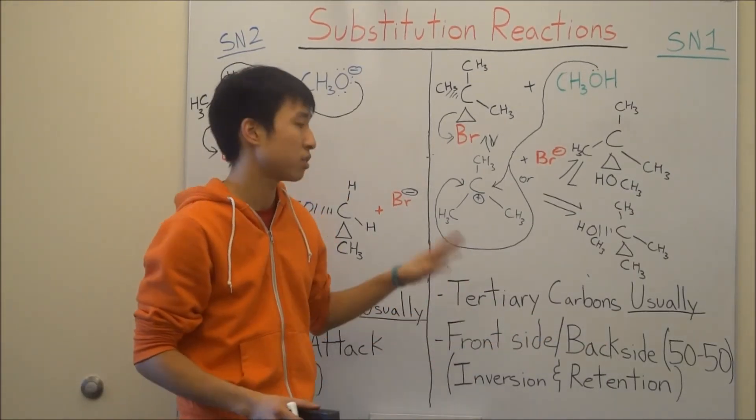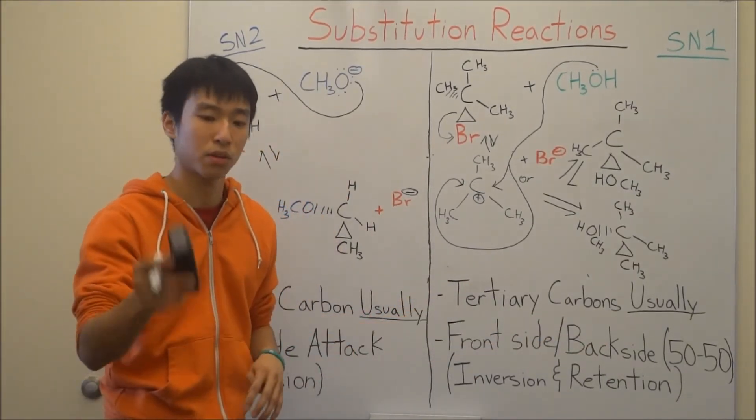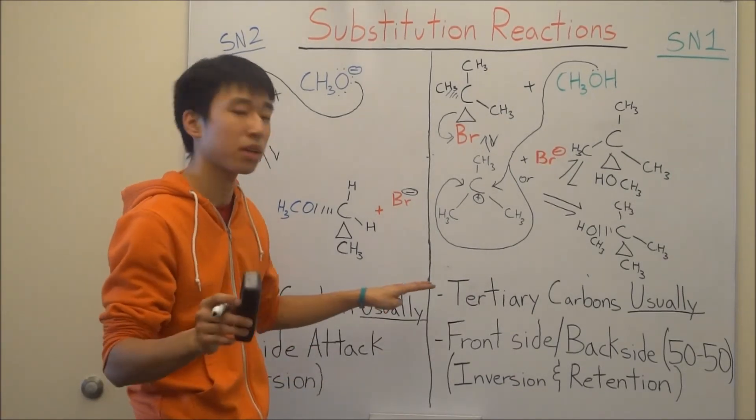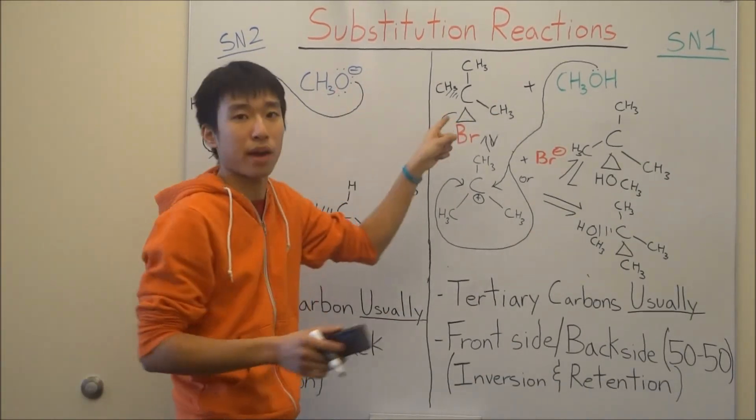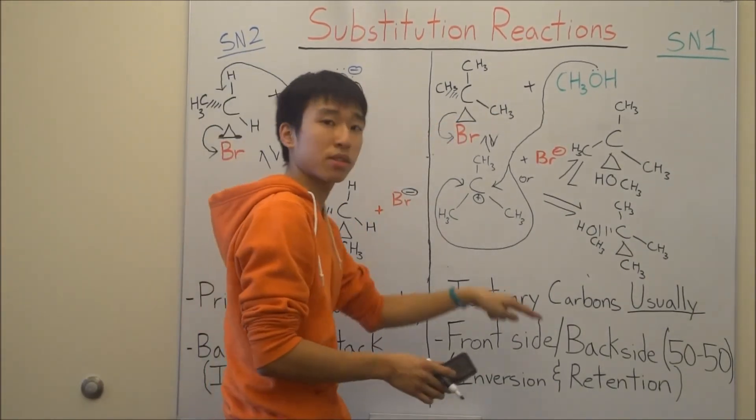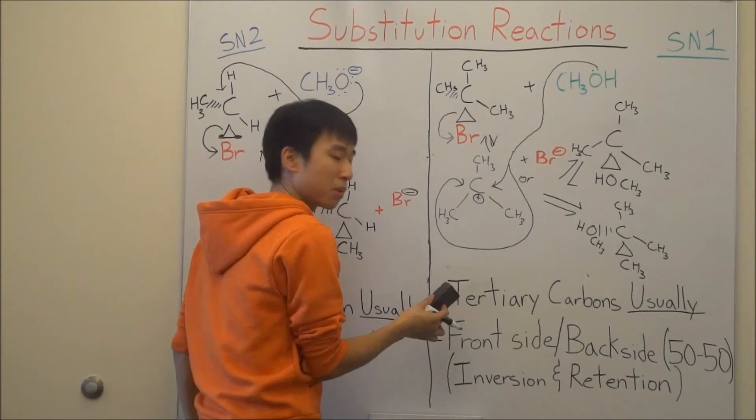And, front side, back side, 50-50. You understand now why it has to be a tertiary carbon, right? Because of the whole... Yeah. It has to be a tertiary carbon because if it was a primary carbon, like SN2, then your methanol can just attack in the back. But anyway, I'm going to erase this to make even more space, so copy it down if you want to. But yeah.